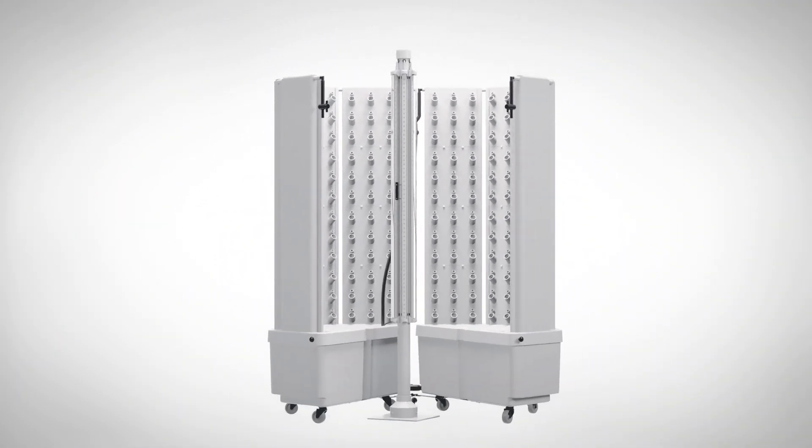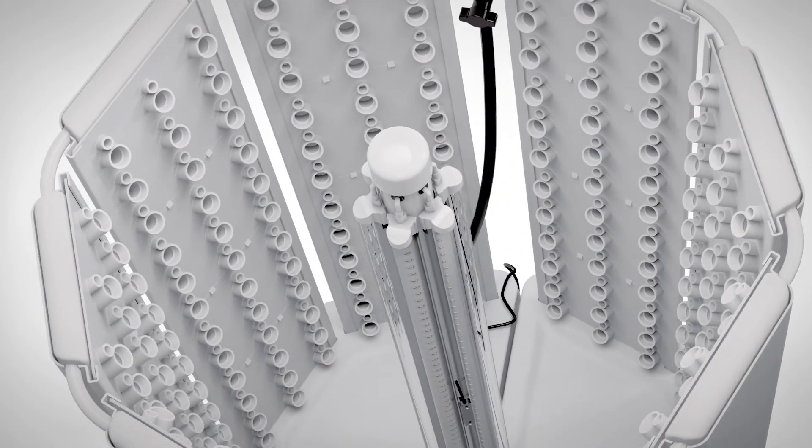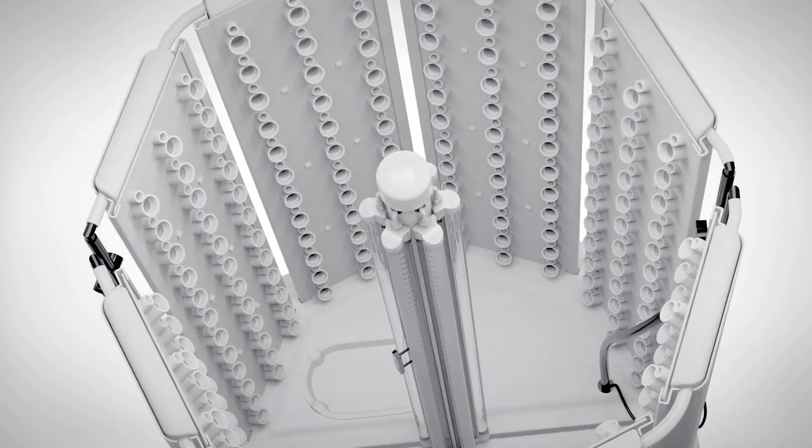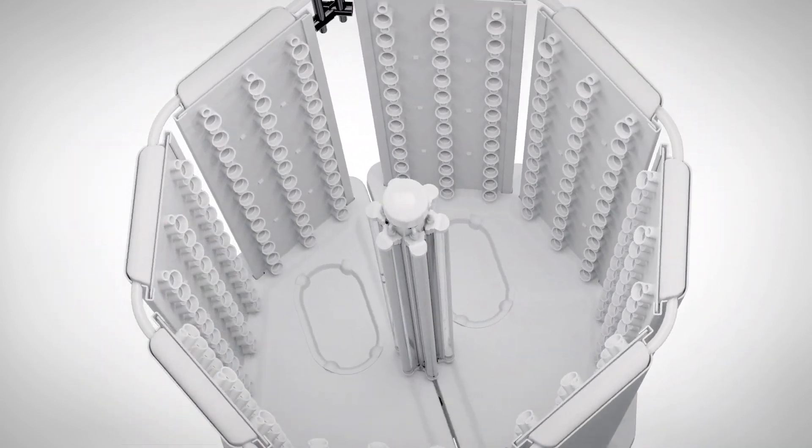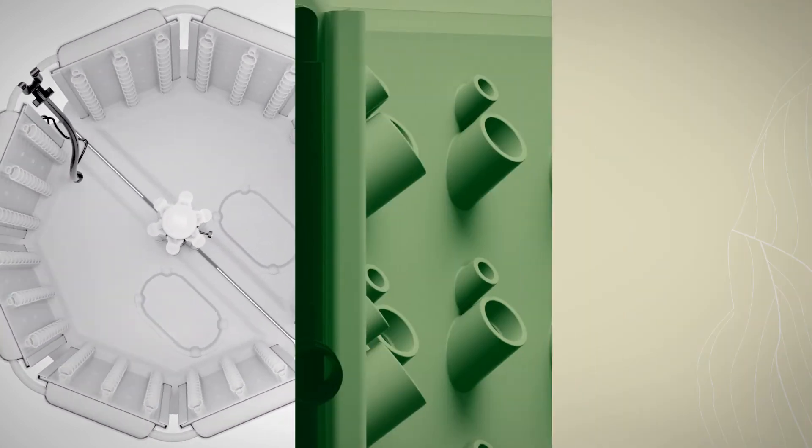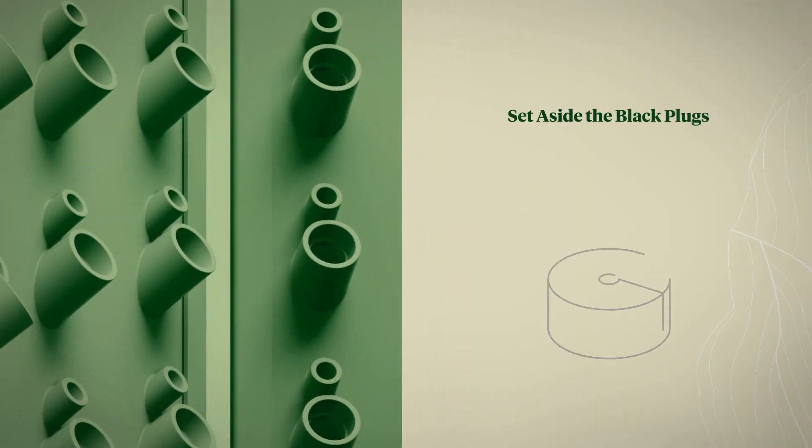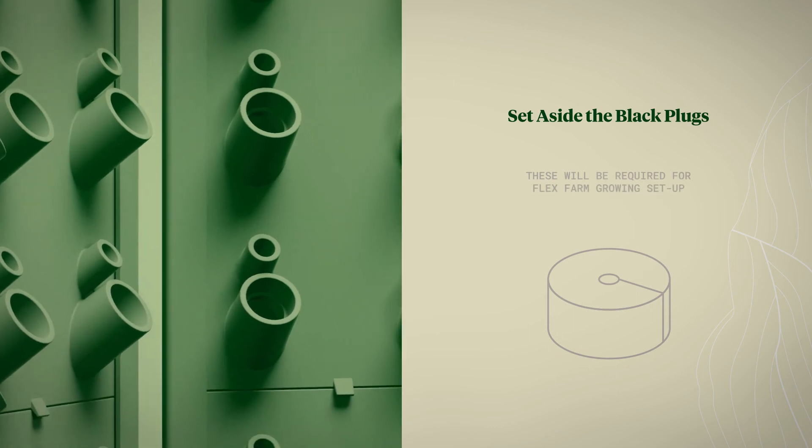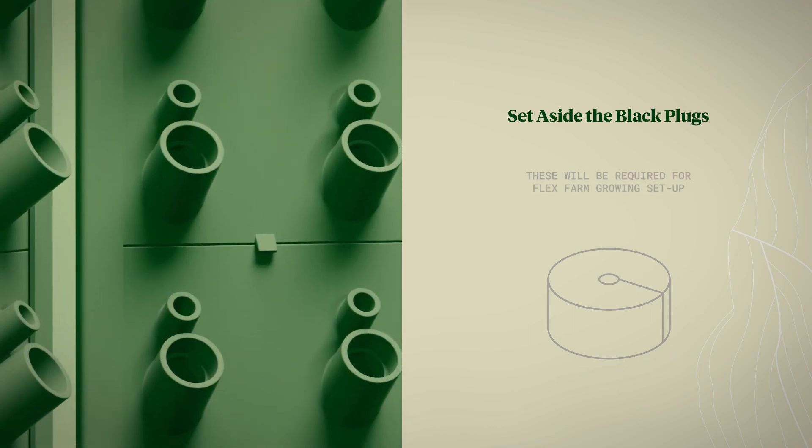Set the light tower in between the FlexFarm tanks with the power cord positioned in the same direction as the drainage valve. When the light tower is positioned correctly, it should fit inside the half circle cutouts located on the tanks and the handle should be facing where the FlexFarm opens for easy access. Set aside the black plugs. These will be required for FlexFarm growing setup. Refer to the grow guide for use.